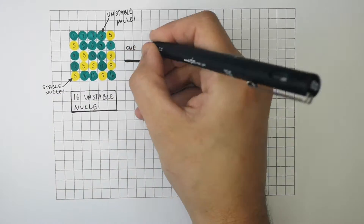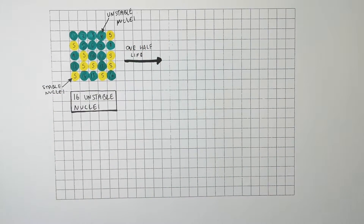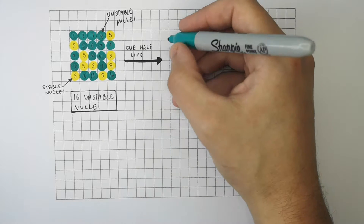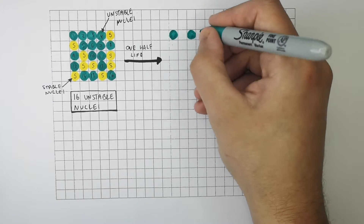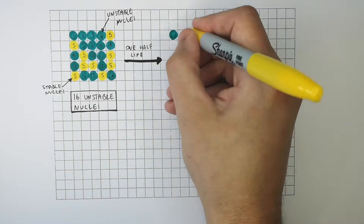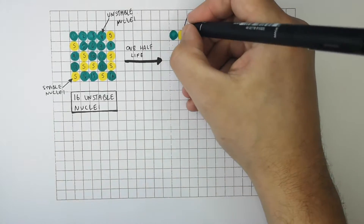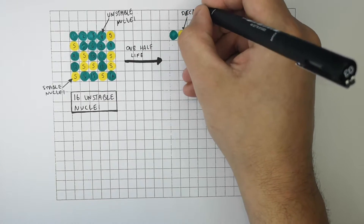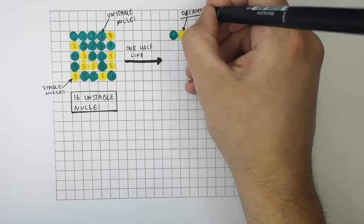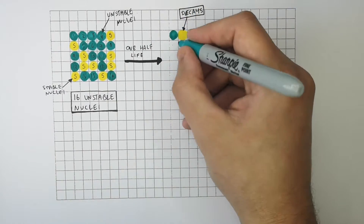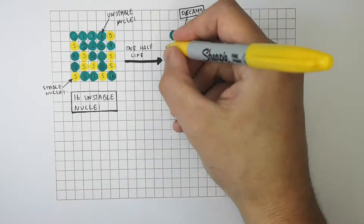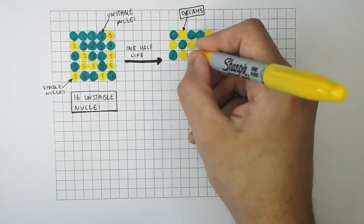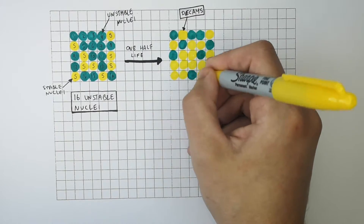After one half-life, we're going to expect 8 unstable nuclei, because a half-life means the number of unstable nuclei is going to halve — in this case from 16 to 8. As you can see, this nucleus became stable through decay, so half of all the unstable nuclei in the first sample are going to undergo decay and become stable.